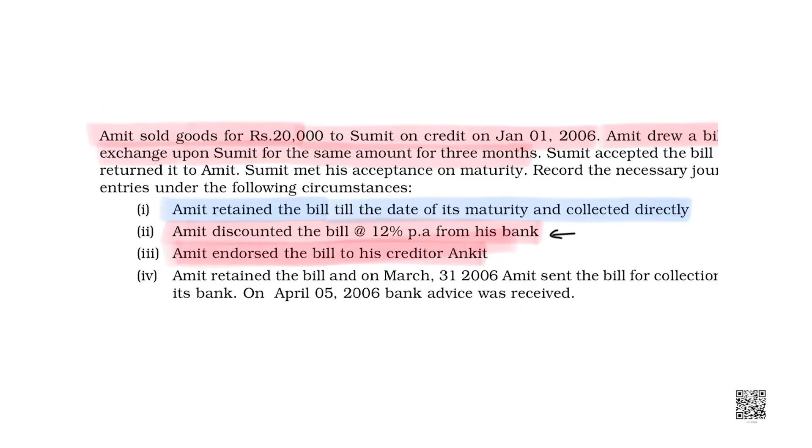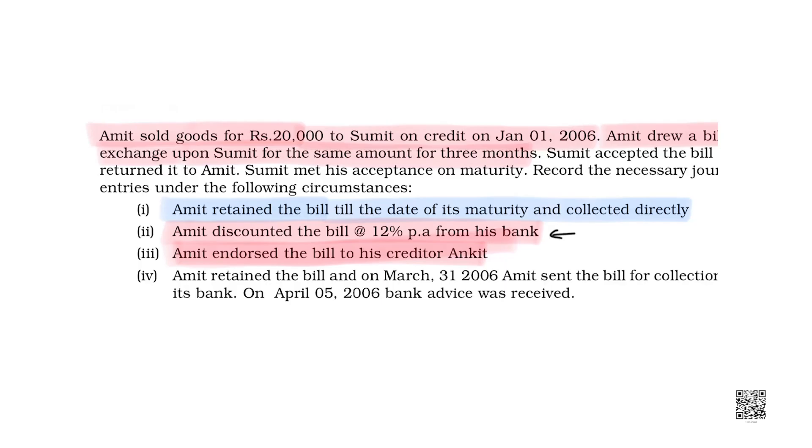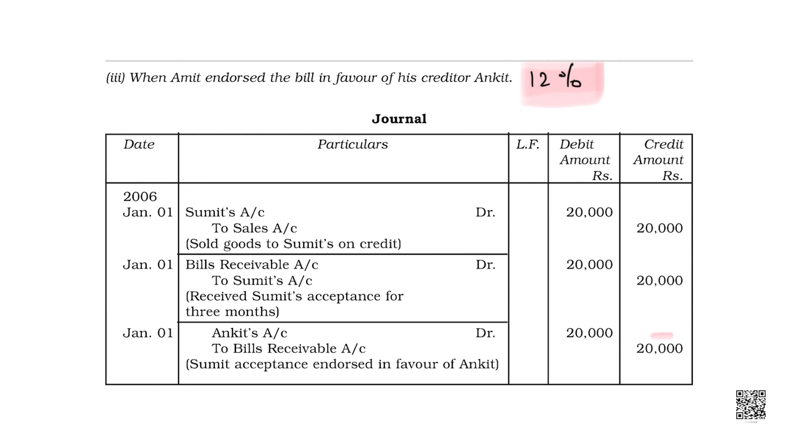The question says Amit endorses the bill to his creditor Ankit. Amit has to pay Ankit. When Ankit approaches Amit for money, Amit says: I do not have money, but I have a bill which will get matured after three months. So Amit gives that bill to Ankit, and Ankit goes to Sumit who is the debtor to collect the receivable on maturity.